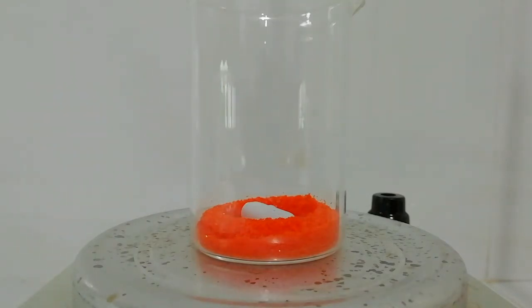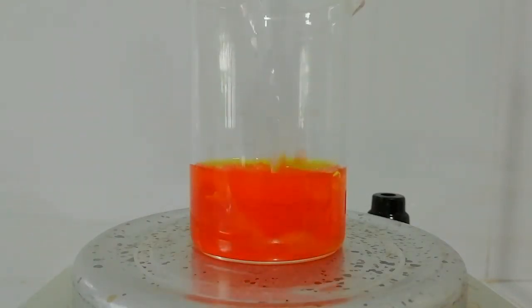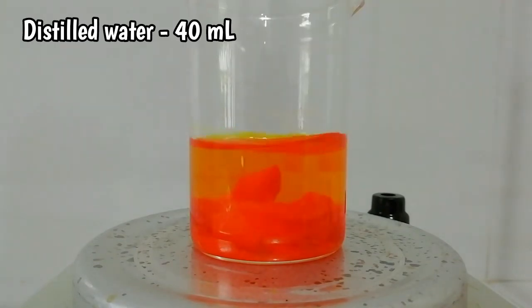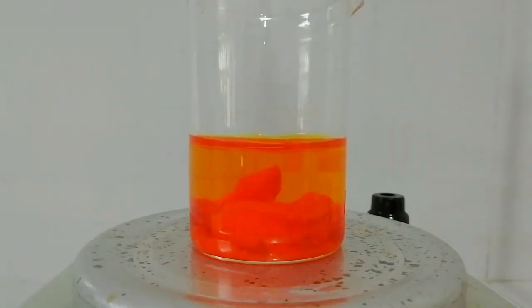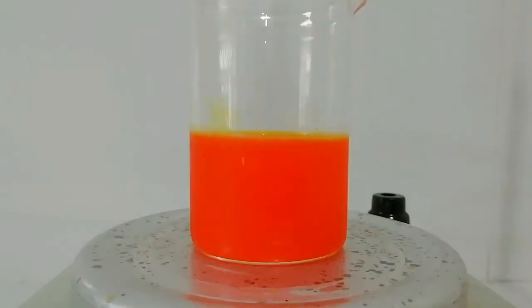I'm going to add 40 milliliters of distilled water here and start stirring. You can see the potassium dichromate is dissolving in distilled water. Now I am going to add about 7.6 milliliters of concentrated sulfuric acid into this mixture.